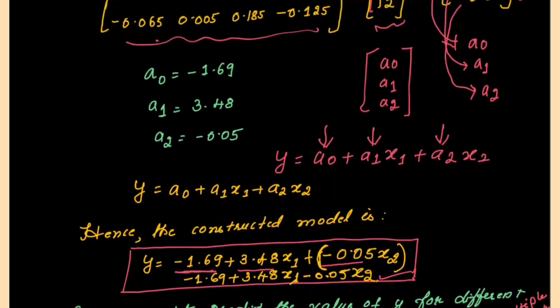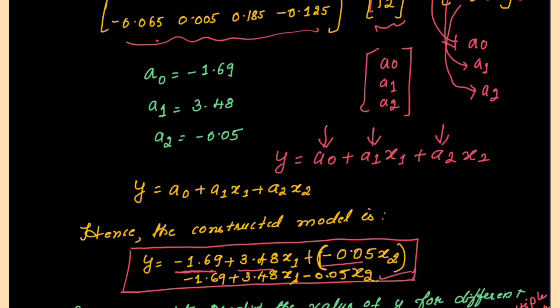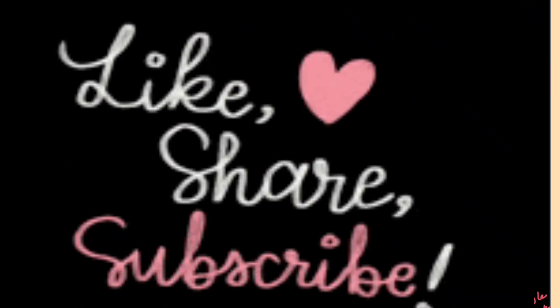This is how the multiple linear regression model works. In this example we took only two independent variables, X1 and X2. There can be more than two — X1, X2, X3 — in which case the equation becomes Y equal to A0 plus A1 into X1 plus A2 into X2 plus A3 into X3. Hope you find this helpful — please like, share, and subscribe to my channel. Thank you, bye-bye and take care.